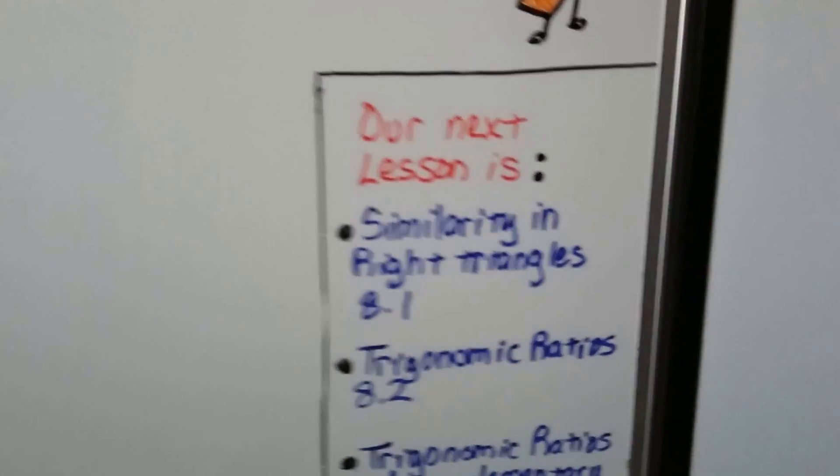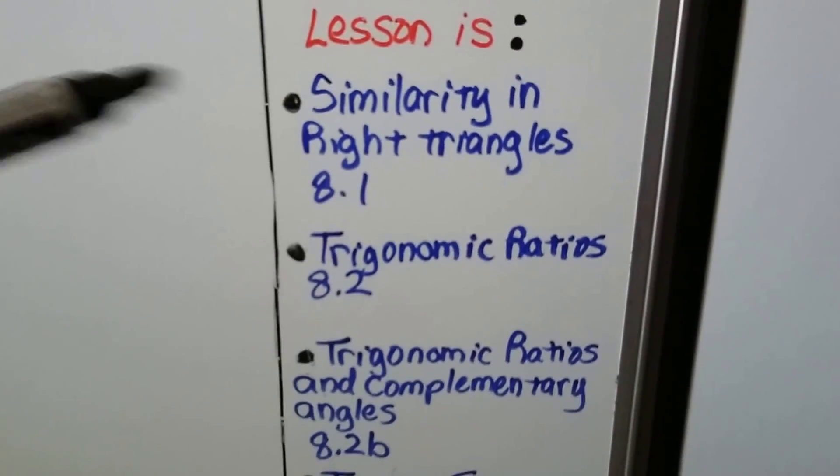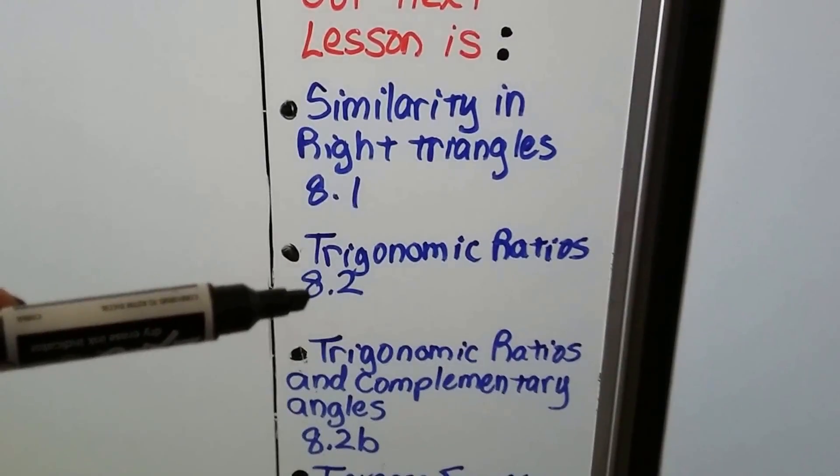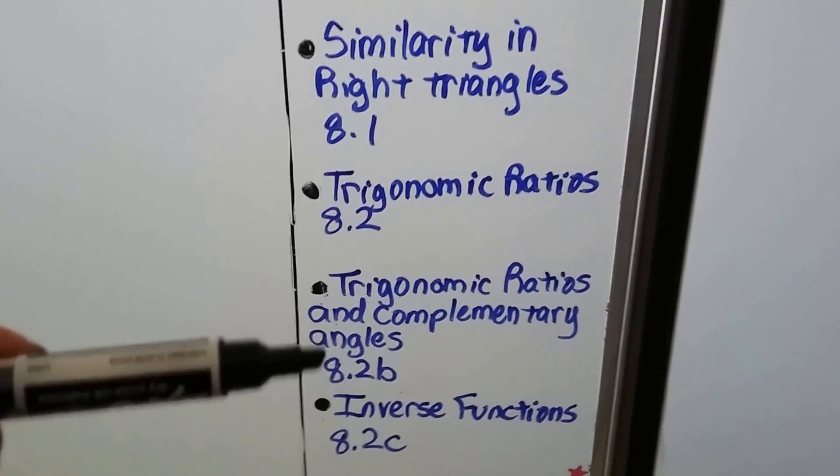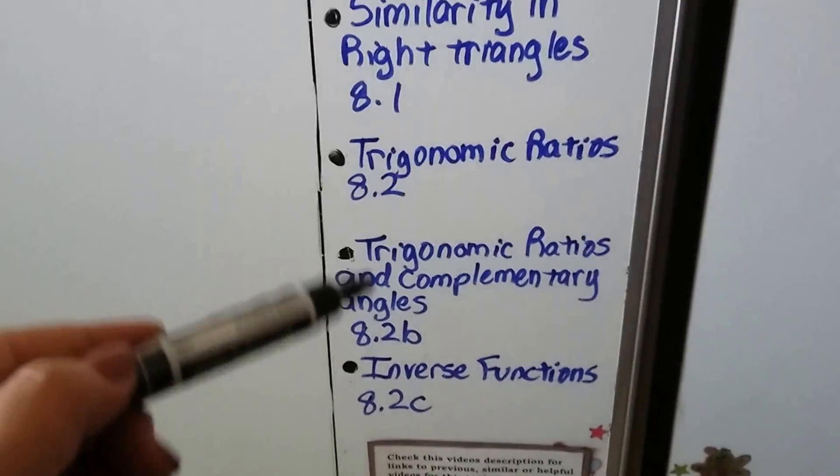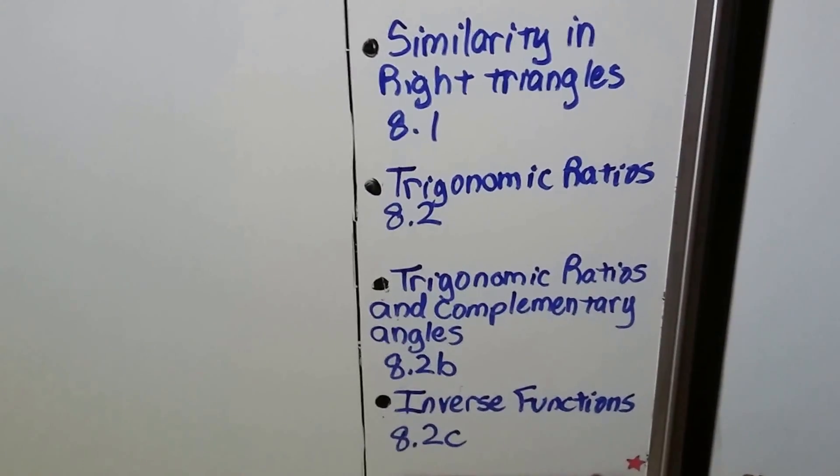Our next lesson is going to be in chapter 8. We're going to talk about similarity in right triangles. Then in 8.2, we're going to talk about trigonometric ratios. 8.2b, we're going to do trigonometric ratios and complementary angles. Then 8.2c, we're going to get to inverse functions.